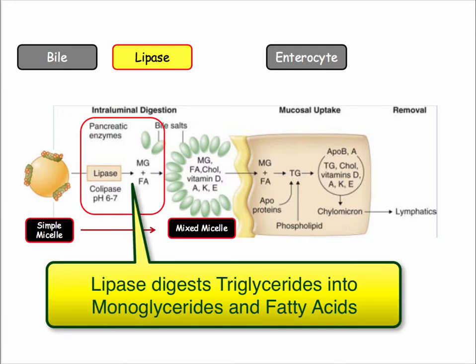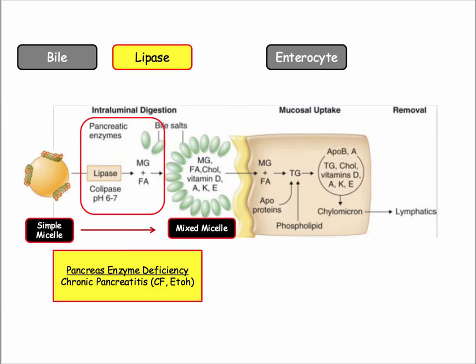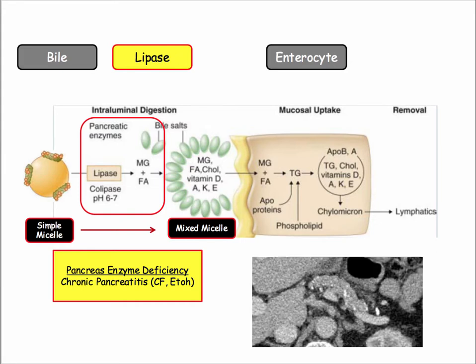Specifically, lipase digests triglycerides into monoglycerides and fatty acids, which then become components of mixed micelles. In terms of fat malabsorption, pancreatic failure is step two in your differential diagnosis. Pancreatic failure will be described by a predisposing factor such as cystic fibrosis or alcohol use.